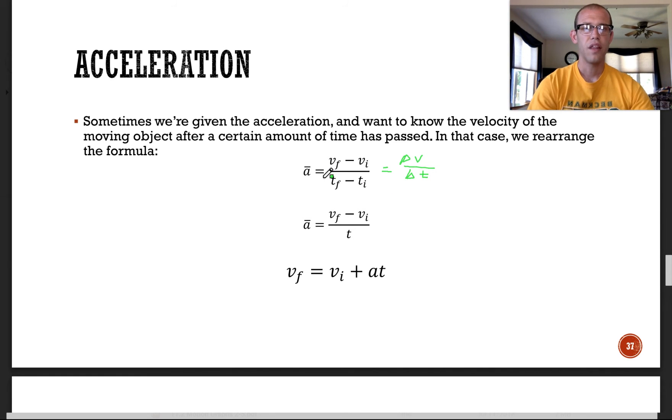Really, time, that is just how much has passed. So a lot of times we'll just write it as t. You could write it as delta t still. It doesn't really matter, but often we just write it as t. And now we can move things around. If we want to solve for vf, I can multiply the t to the other side. So it's right next to the a. And then I can add the v sub i initial velocity to the other side. And what I get out is a vf equation.